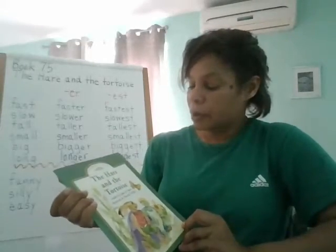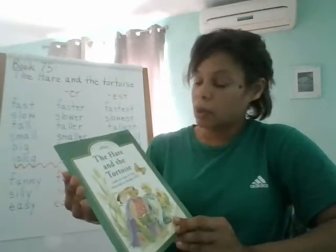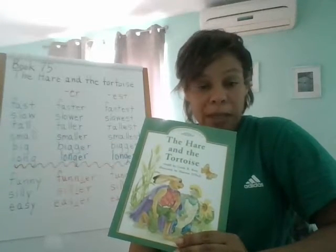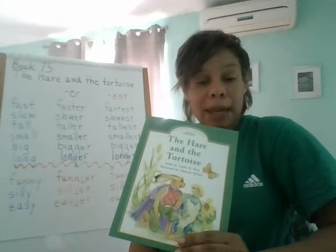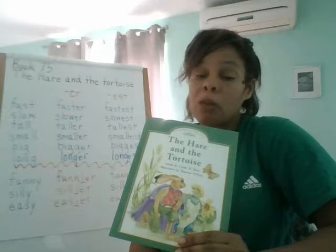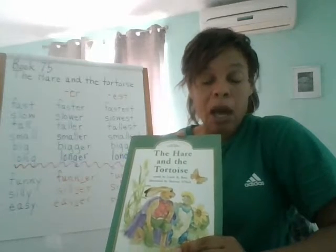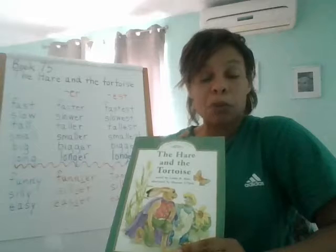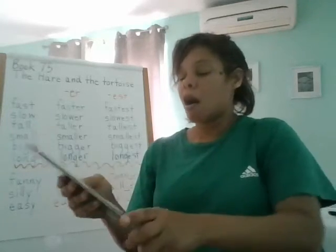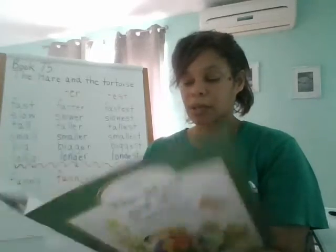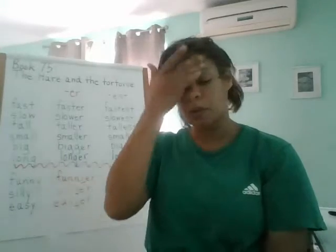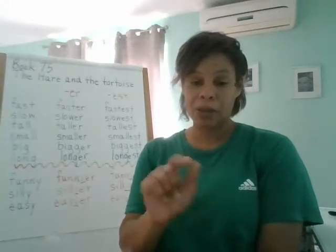Now it's time to read our book for today. It's a level J book: The Hare and the Tortoise. We're going to take turns reading. Since we are remote, I'm going to read the first page — I want you to follow along, then put me on pause and read the first page yourself, trying not to make any errors. We're starting on page number two.